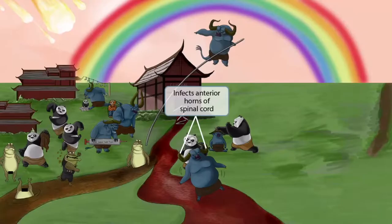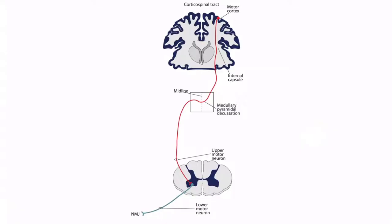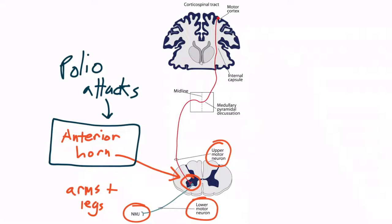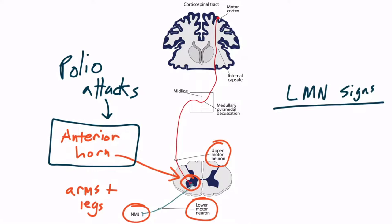Now this oxen closest to us has been grabbed by the horns and is being manhandled. This grabbing of the ox horns represents the anterior horns of the spinal cord. This image demonstrates the corticospinal tract, described in great detail in the neurology physiology chapter. The corticospinal tract is how your brain controls movement of your body. It's made up of two neurons: an upper motor neuron that travels down from the brain to reach the anterior horn of the spinal cord, and a lower motor neuron that carries motor information to the neuromuscular junction to stimulate the appropriate muscles. The anterior horn is directly attacked in polio, and since it houses the cell body of the lower motor neuron, damage here will result in lower motor neuron signs, including weakness, paralysis, fasciculations, and atrophy.